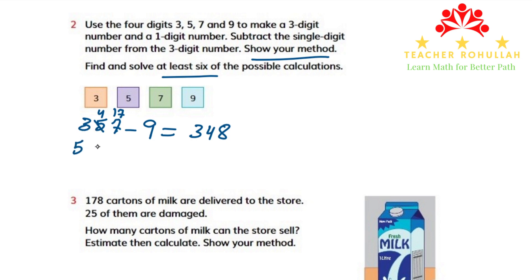We can also make 579 minus 3. 9 minus 3 is 6, 7 minus nothing is 7, and 5 minus nothing is 5. So the answer is 576.